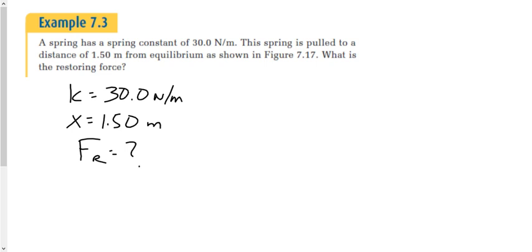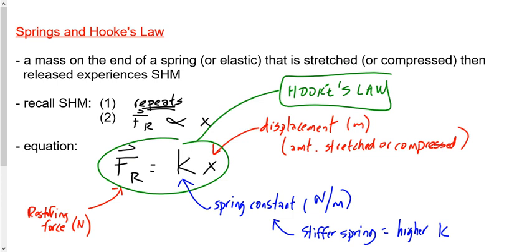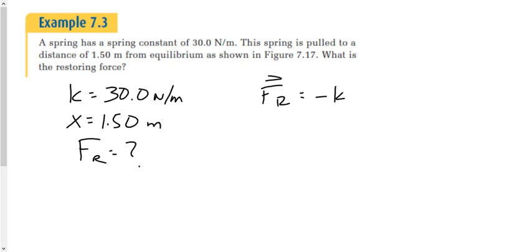That is a lowercase k — capital K would be a different constant. The restoring force equation has a negative: FR equals negative KX. This tells us that if the displacement is one way, the spring pulls back the opposite way. If I stretch the spring to the right, the spring pulls back to the left. So the restoring force is technically negative KX, but if you leave the negative off, you'll still get full marks.